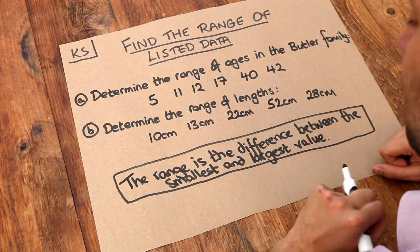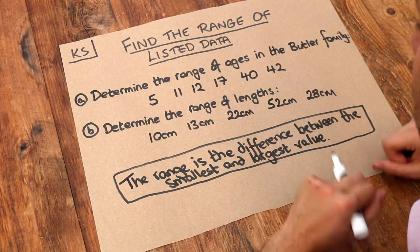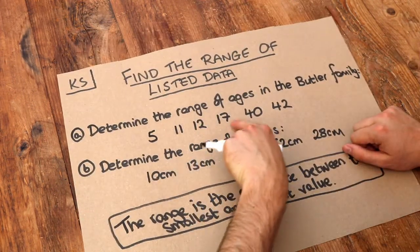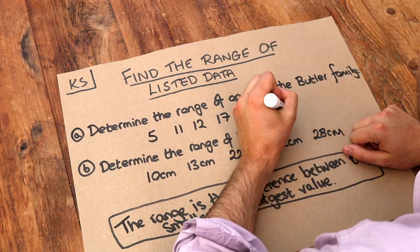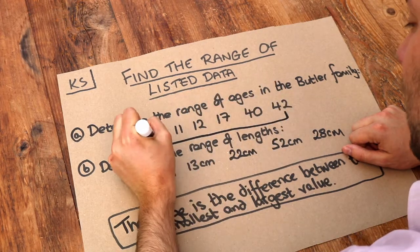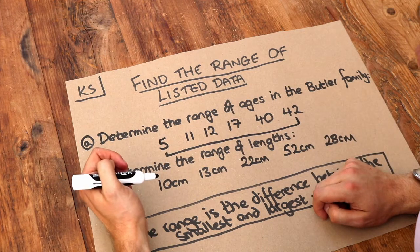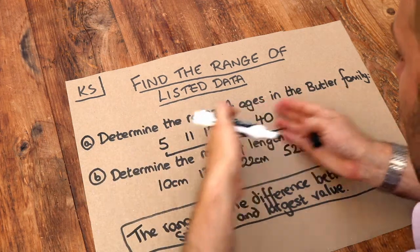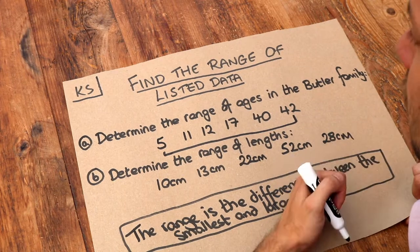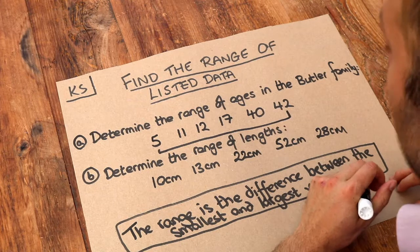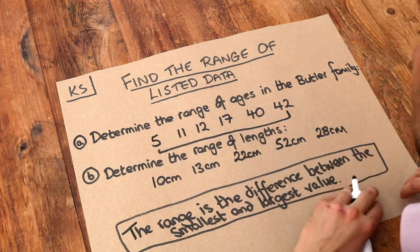And the reason it's a useful value is because it tells us how spread out the data is. So for example, we take these ages of people in the Butler family. It tells us how spread out the ages are because we can see the difference between the youngest person and the oldest person. And if you have a greater range, then the values are more spread out. So it gives us an additional way of describing data without just talking about an average like the mean or the median.